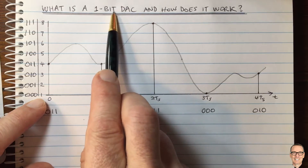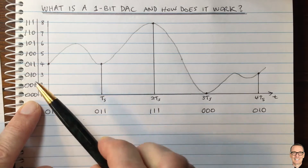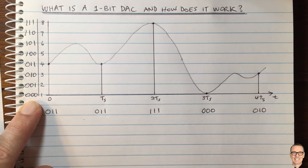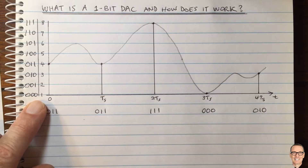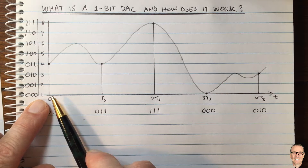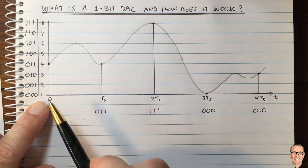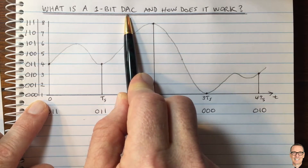Now, what about this one-bit digital-to-analog converter? It might be that you don't want a DAC with three bits. For CD players, signals are typically sampled with 16 bits, which means 65,536 levels — not just eight. 16-bit converters with 65,536 levels are very complex pieces of electronics and very expensive to make. So for consumer-grade CD players to play back CD music, it's very common to use a one-bit DAC because it's much cheaper.